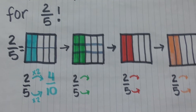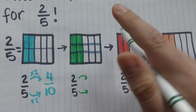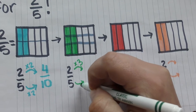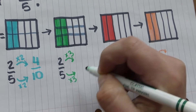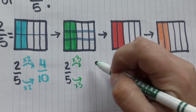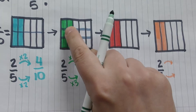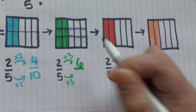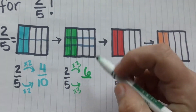Now if I wanted to multiply, since I cut it into three, I'm gonna multiply the numerator times three and the denominator times three. Two times three is six, like we have our six equal parts, and five times three is fifteen.